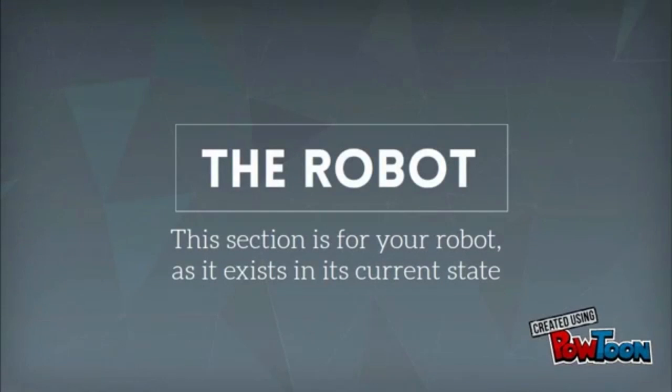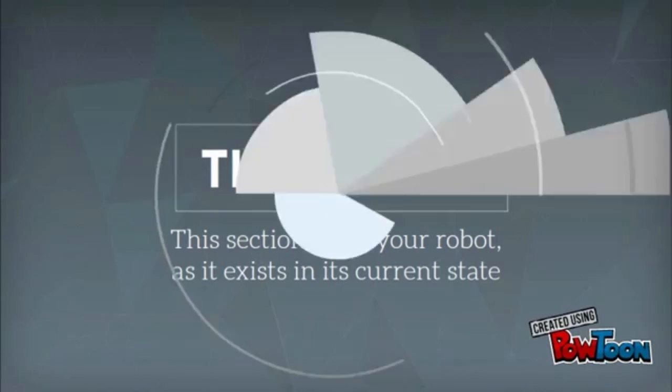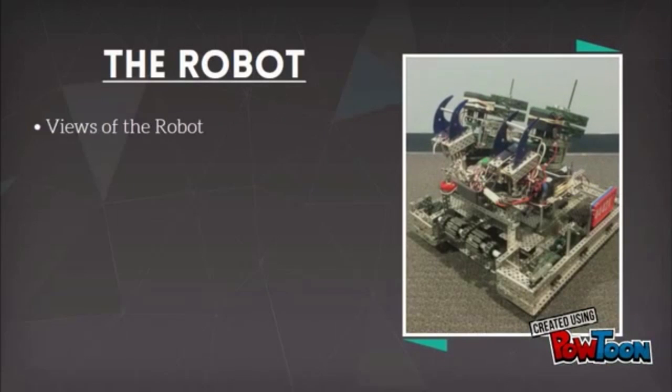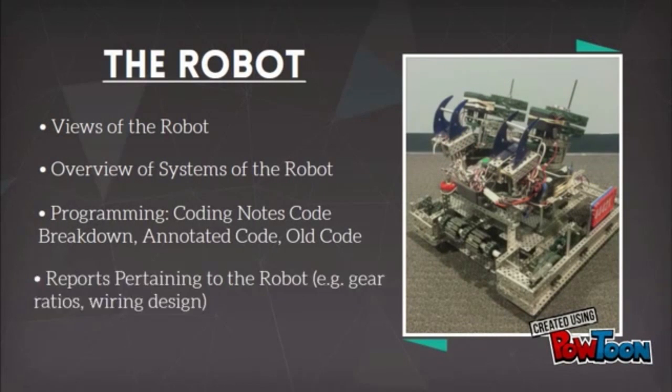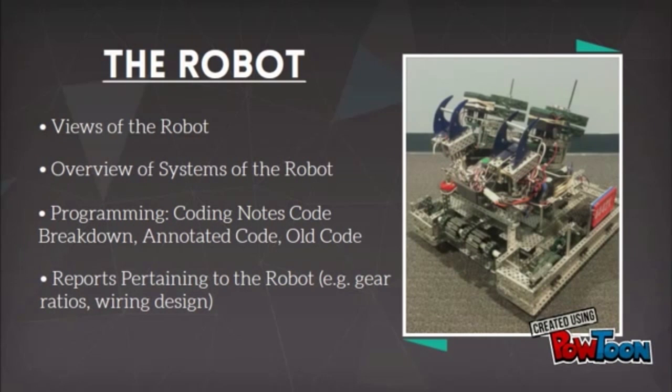The robot section should be about your robot as it exists in its current state. Reviews of your robot, an overview of the systems of your robot, programming information, and reports pertaining to your current robot.